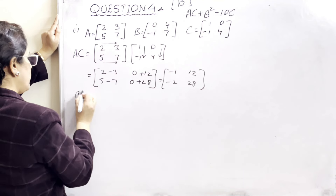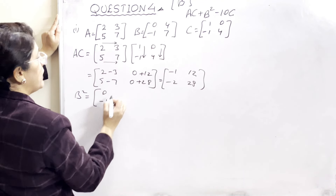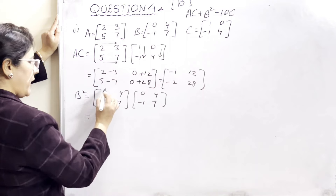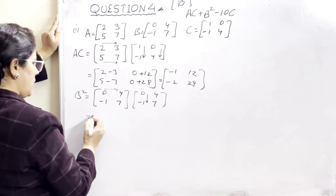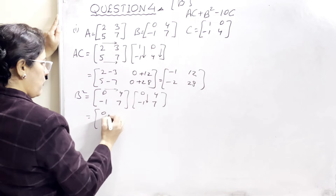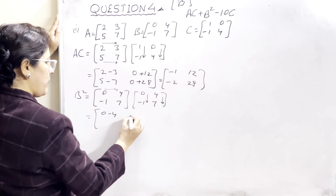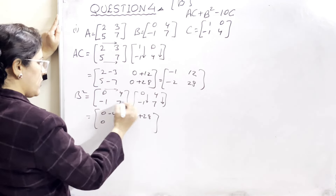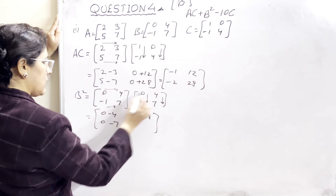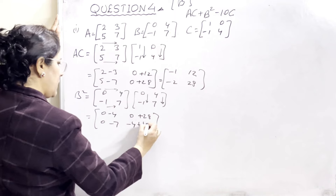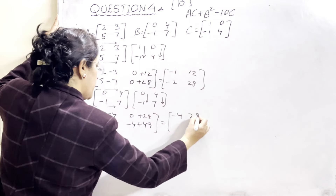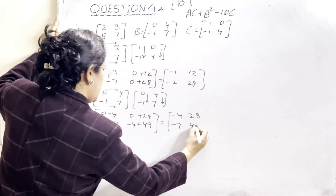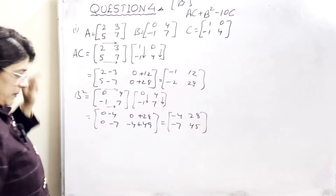Ab second humne B² nikalna hai. B² ke liye B matrix ko B se hi multiply karna hai: [0, -1, 4, 7] × [0, -1, 4, 7]. Wahi rule rahega — horizontal row lenge, phir vertical column. 0×0=0, aur 4×4=16 — iske aage 0 aur minus 7 aaya. Second row mein: minus 4, phir 7×7=49 minus 4=45. Toh B² ki value aa jayegi: -4, -7, 28, aur 49-4=45.